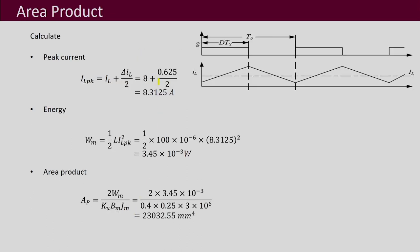We first calculate the area product, and for that we first calculate the peak current. Substituting the values, we obtain the peak current. Then we calculate the energy as half L times IL_peak squared. Substituting all the values, we get 3.45 millijoules.